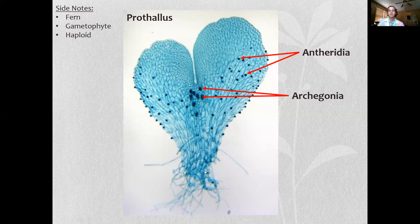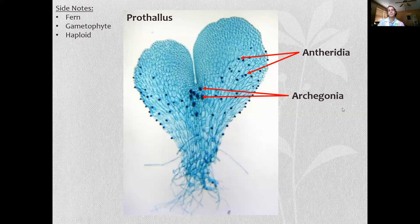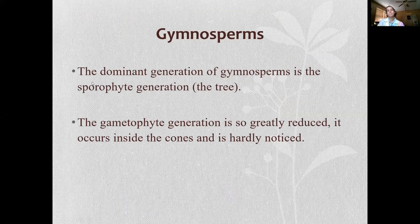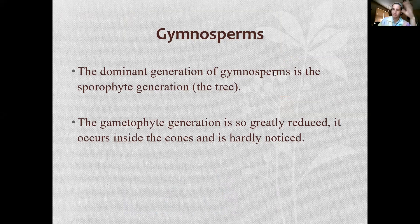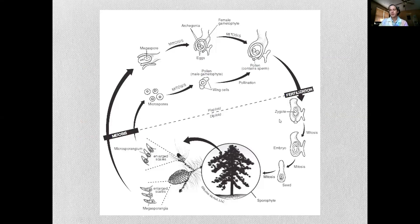The dominant generation of gymnosperms is the sporophyte generation, the tree. The gametophyte generation is so greatly reduced, it occurs inside the cones, and you're probably never going to notice it. So let's take a look at that.